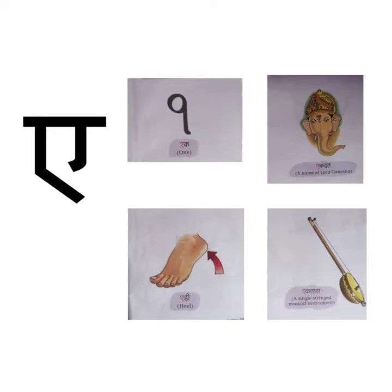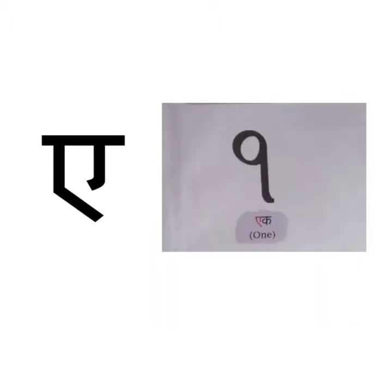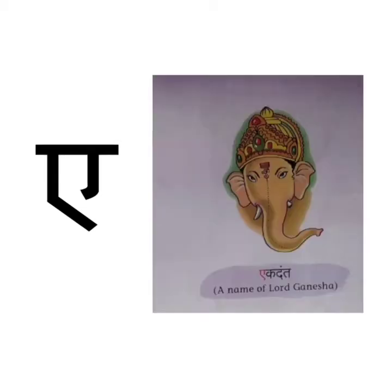A — A say ek, A say ek danta, A say adi, A say ek tara. Ek means number one. A say ek danta — ek danta is one more name for Lord Ganesha. Ek means one and danta means tooth or tusk. So ek danta means one who has only one tooth or one tusk. Lord Ganesha has only one tusk, so he is called ek danta.